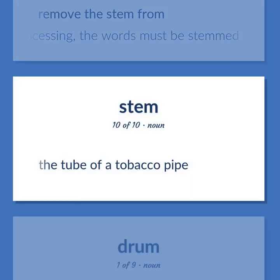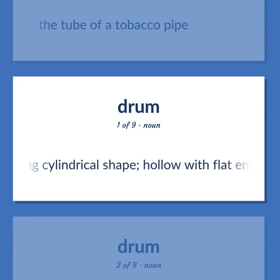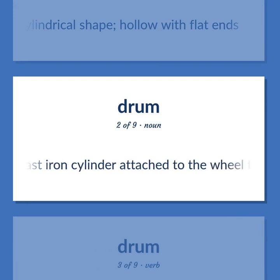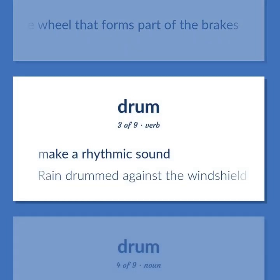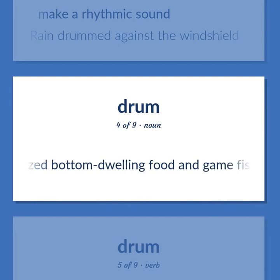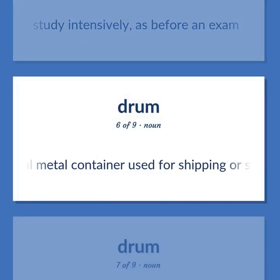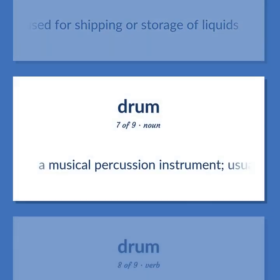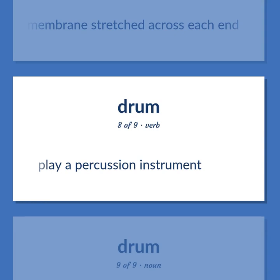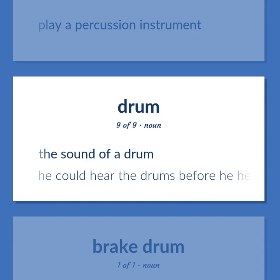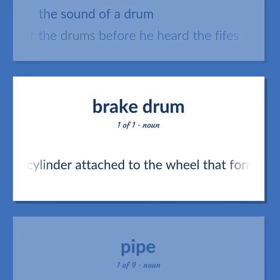Drum: the tube of a tobacco pipe. A bulging cylindrical shape, hollow with flat ends. A hollow cast iron cylinder attached to the wheel that forms part of the brakes. Make a rhythmic sound — rain drummed against the windshield. Small to medium-sized bottom-dwelling food and game fishes of shallow coastal and fresh waters that make a drumming noise. Study intensively, as before an exam. A cylindrical metal container used for shipping or storage of liquids. A musical percussion instrument — usually consists of a hollow cylinder with a membrane stretched across each end. Play a percussion instrument. The sound of a drum — he could hear the drums before he heard the fifes.